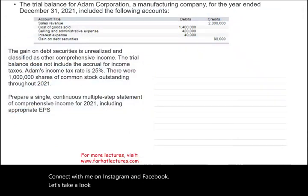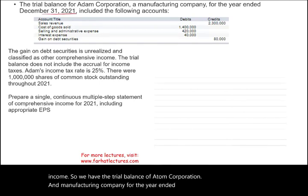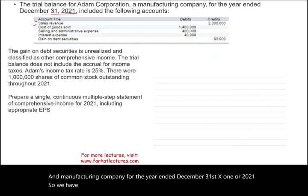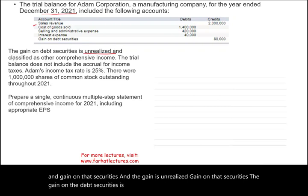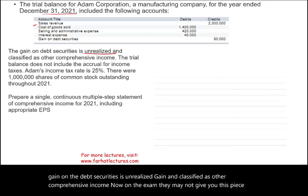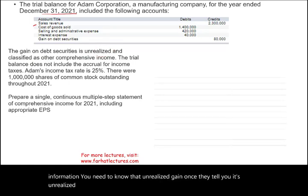Let's take a look at this example to illustrate the concept of comprehensive income. We have the trial balance of Adam Corporation, a manufacturing company for the year ended December 31, 2021. We have revenues, cost of goods sold, selling and administrative, interest, and gain on debt securities. The gain on the debt securities is an unrealized gain classified as other comprehensive income. On the exam, once they tell you it's an unrealized gain, you need to know it's part of comprehensive income.